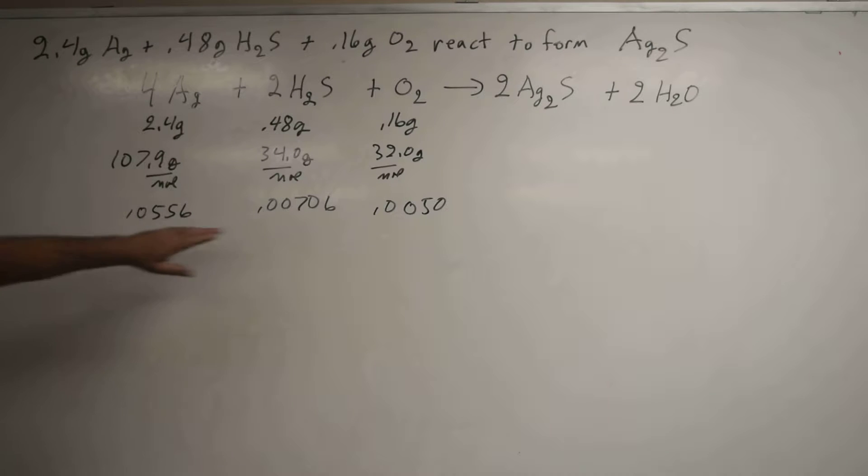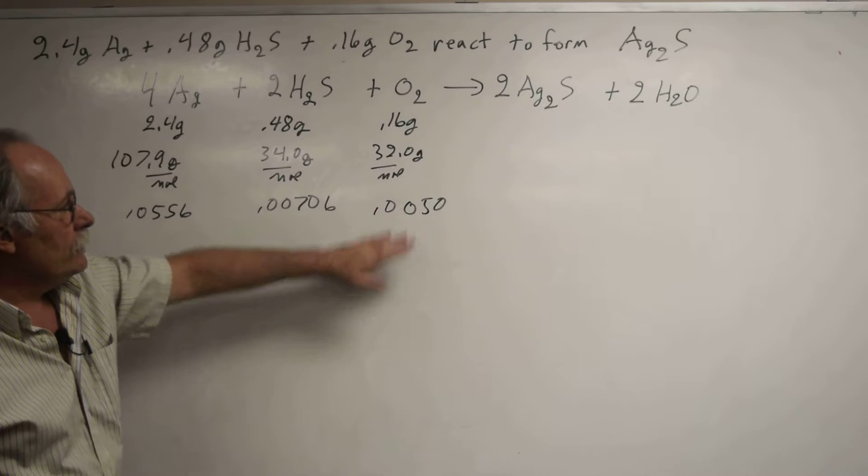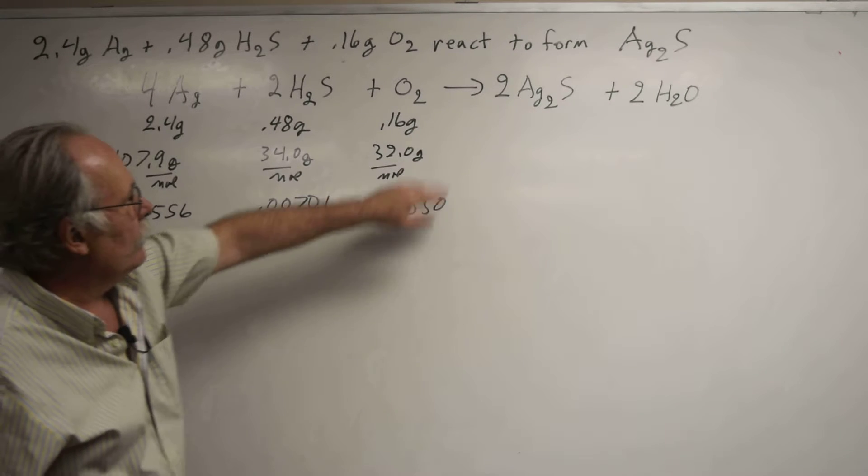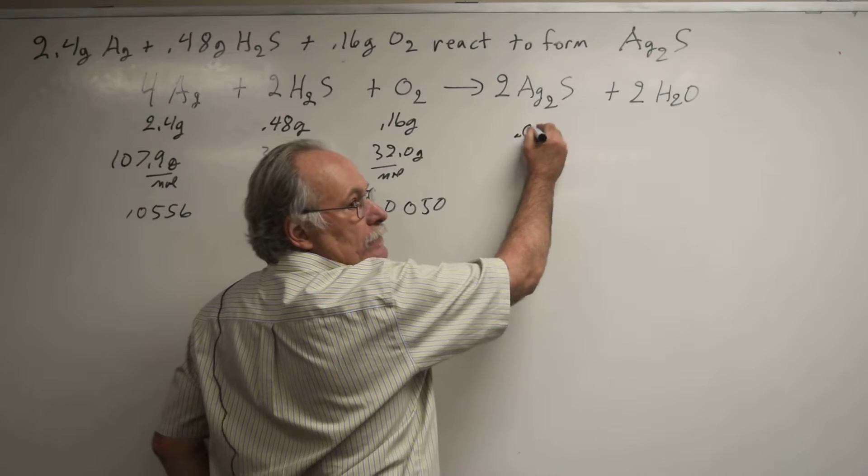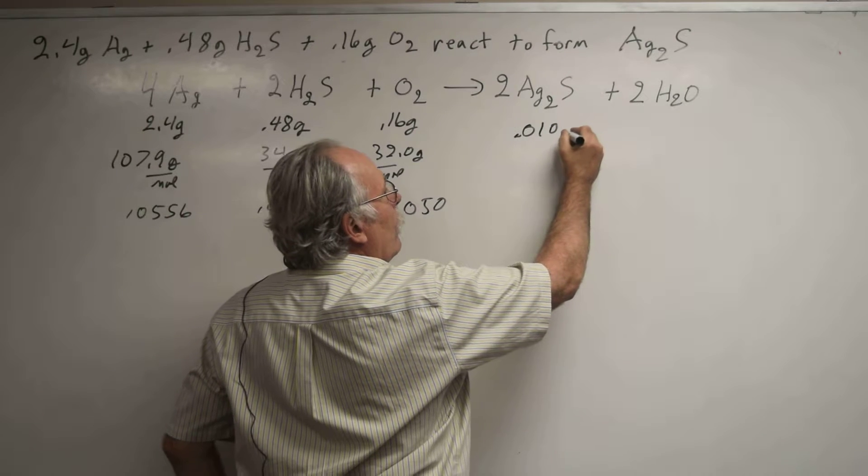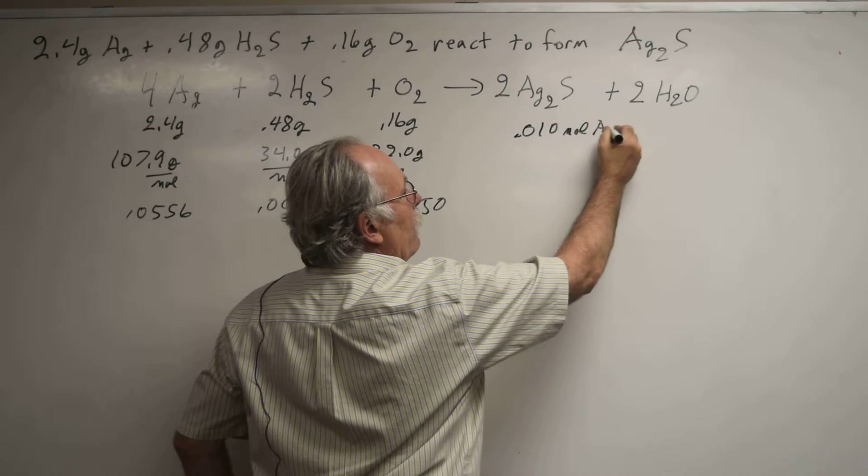This is the smallest number, so this is the limiting reagent. I would then take this number, multiply by 2, and I come up with my theoretical yield of 0.010 moles of Ag2S.